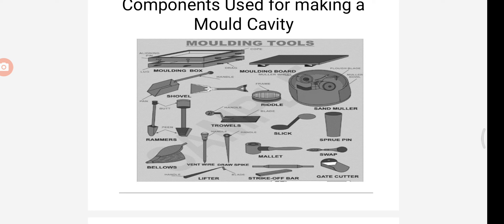Next we can see the lifter. It is used to clean and finish the opening of deep molds. It is also used to repair broken surfaces of the mold. It is made of steel in various widths and lengths. Next we can see the strike-off bar. It is mostly made of wood and has a straight edge. It is used to strike off excess sand from the mold after ramming.